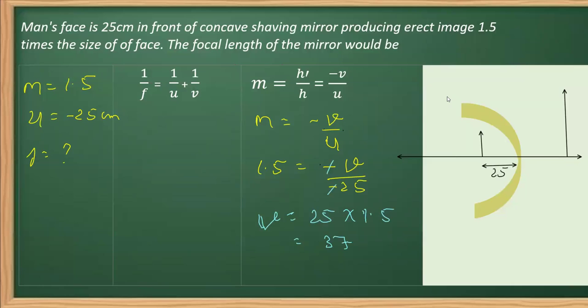It will give you 37.5 centimeters. As you can see, this is in centimeters. Once we got the value of V, now we will be using this other relation, that is the mirror formula, to get the focal length.